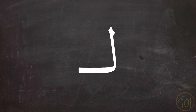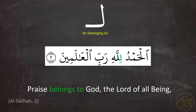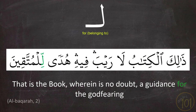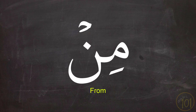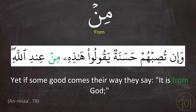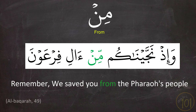Next is the preposition لَ — it can be seen as لِ with kasra or لَ with fatha — and it means 'for'. Next is the preposition مِنْ, and مِنْ means 'from'. Like in these examples: وَإِن تُصِبْهُمْ حَسَنَةٌ يَقُولُوا هَذِهِ مِنْ عِنْدِ اللَّهِ — and: وَإِذْ نَجَّيْنَاكُمْ مِنْ آلِ فِرْعَوْنَ.